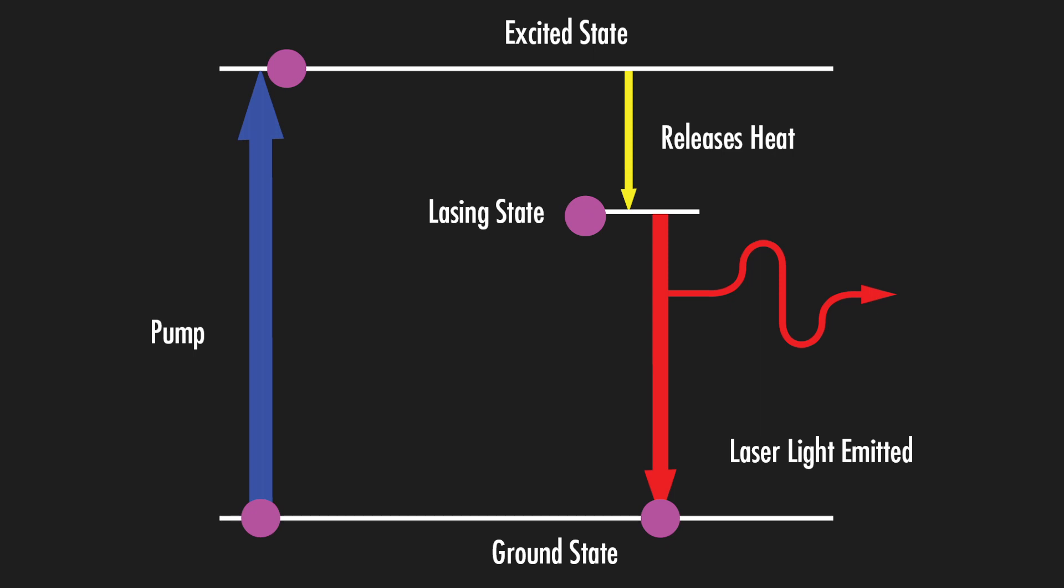Electrons are excited to the second state, and then relax back to the first excited state. This allows population inversion to occur, and the laser to lase.